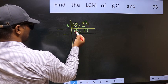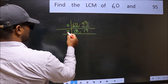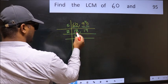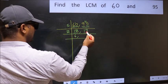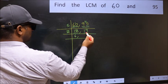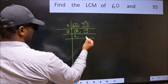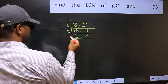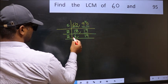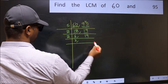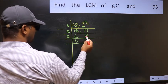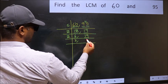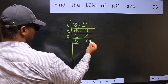Now we have 12 and 19. Dividing by 2: 12 gives 6 and 2. The other number, 19, is not divisible by 2, so we write it down as it is. Again dividing 6 by 2: 6 is 2 threes, so we get 3. The other number, 19, is again not divisible by 2, so we write it down as it is.